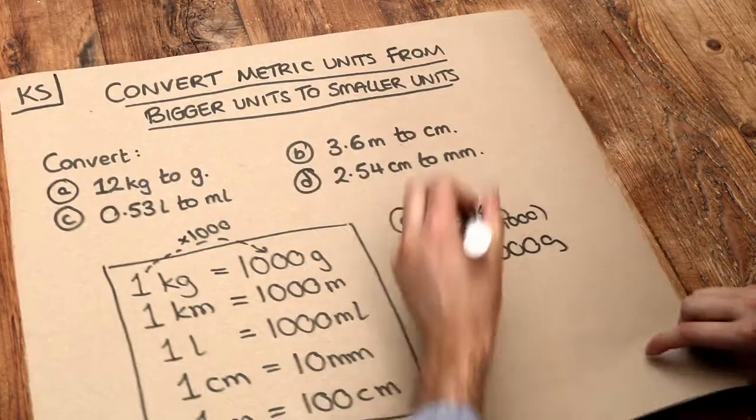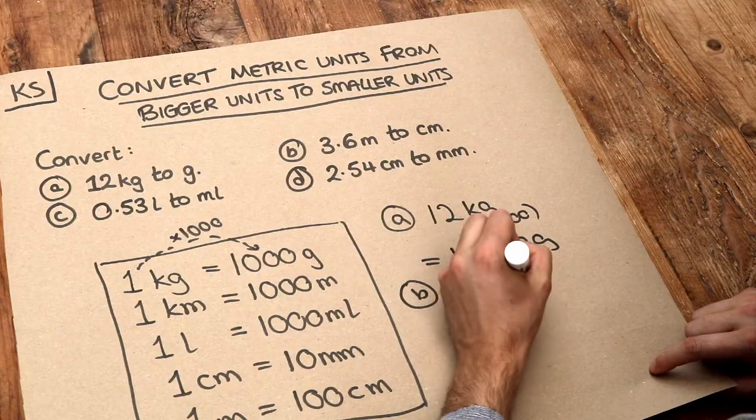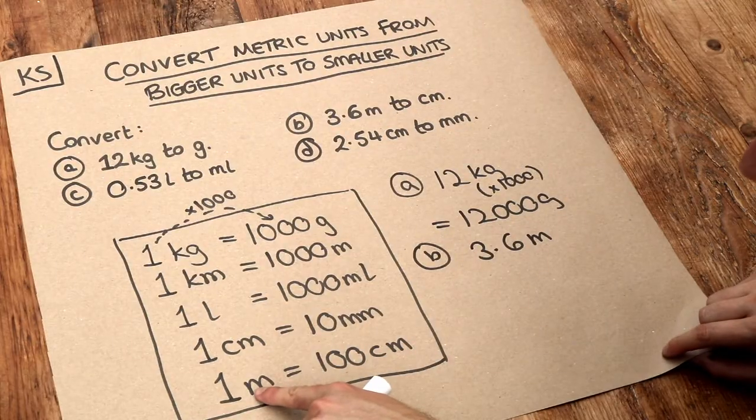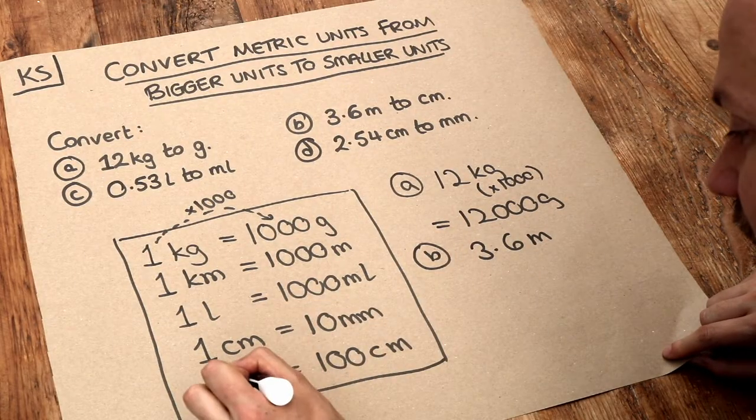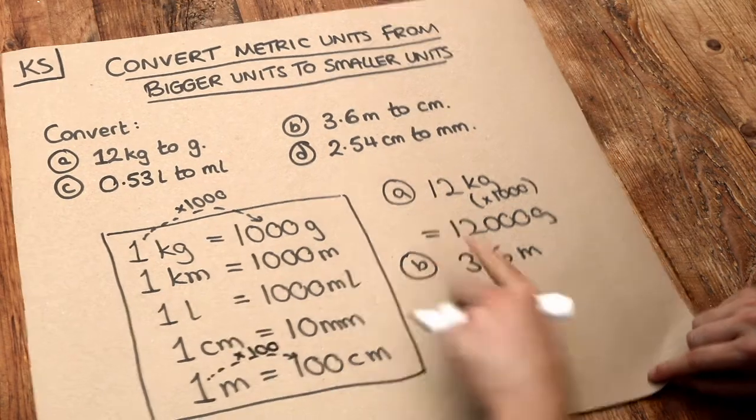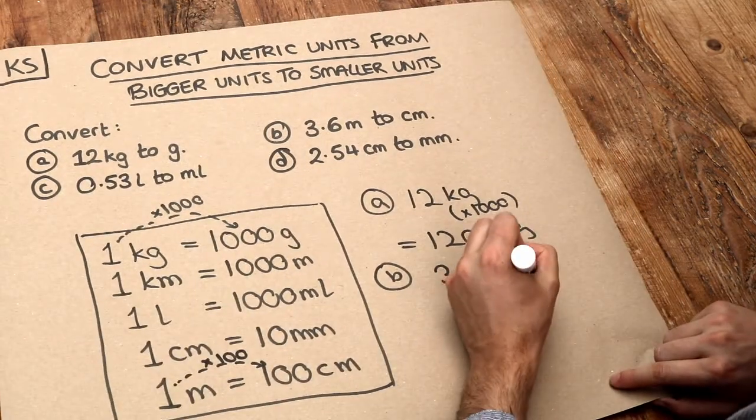What about B? We've got 3.6 metres and we want to convert it to centimetres. Now, can you see to get from metres to centimetres, the number is getting a hundred times bigger? So therefore, we need to times 3.6 by a hundred.